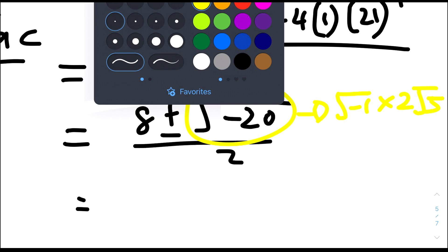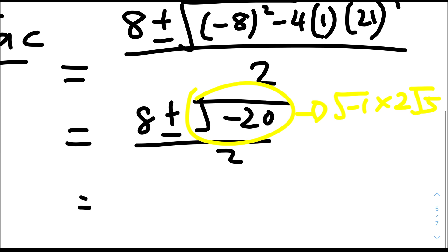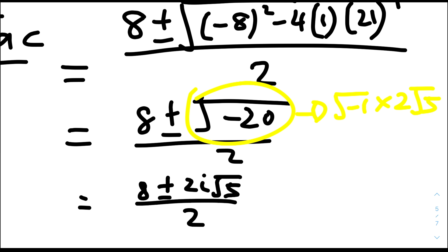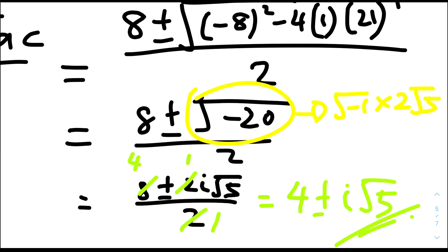We cancel the 2 from top and bottom, giving the final answer: z equals 4 plus or minus i root 5.